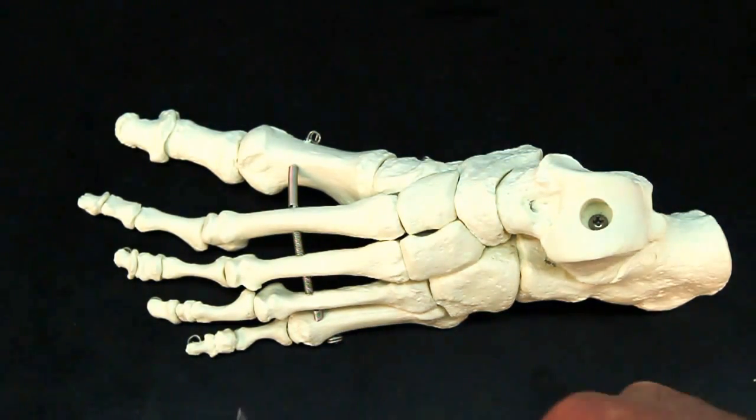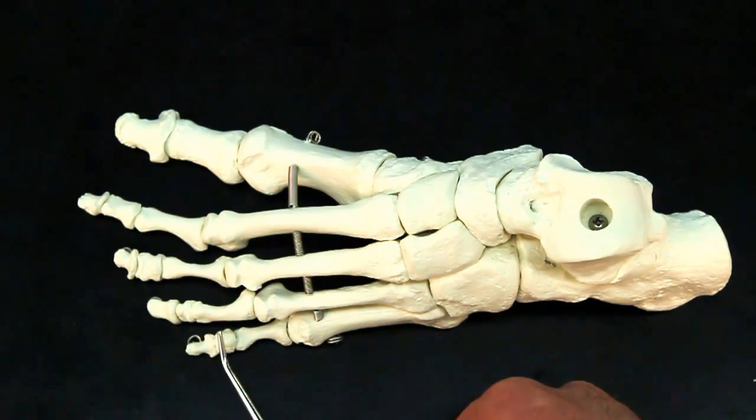Now obviously in toe five, this distal and middle phalanges are pretty small, but they're still there.